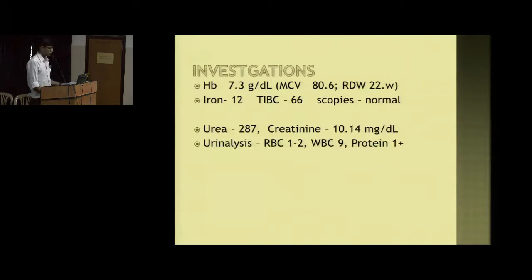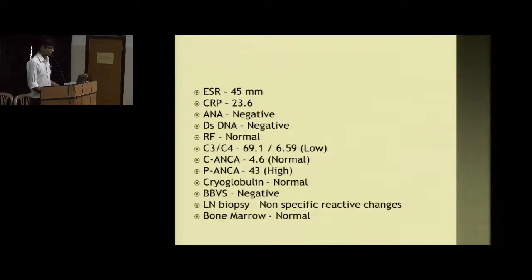On investigation, his hemoglobin was low, iron and TIBC were low. Scopies were done outside as well as here, both were normal. His urea was elevated and creatinine was 10. Urine analysis showed RBC 1-2, WBC 9, with 1+ proteinuria.